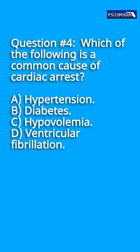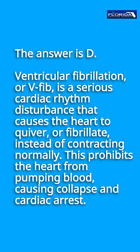Question number 4: Which of the following is a common cause of cardiac arrest? A. Hypertension. B. Diabetes. C. Hypovolemia. D. Ventricular fibrillation. The answer is D. Ventricular fibrillation, or V-fib, is a serious cardiac rhythm disturbance that causes the heart to quiver, or fibrillate, instead of contracting normally. This prohibits the heart from pumping blood, causing collapse and cardiac arrest.